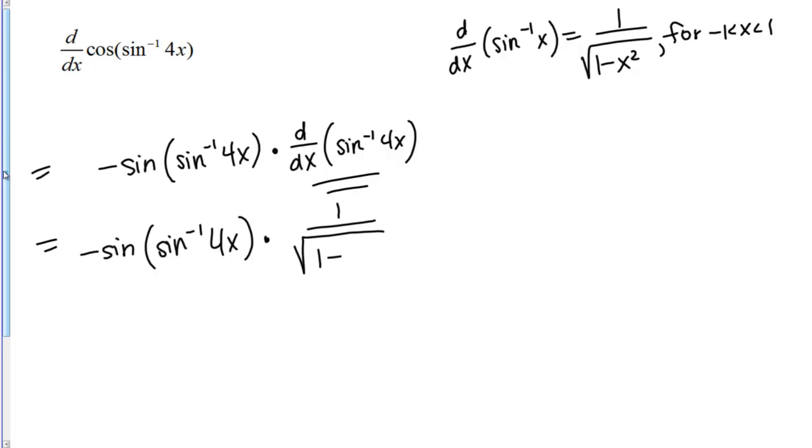now my inner function in this case is 4x, so I want to keep my inner function in there. So this is going to be 1 minus the quantity 4x squared. And remember to square that whole quantity. And then times the derivative of the inner function, 4x.